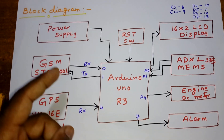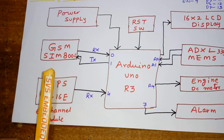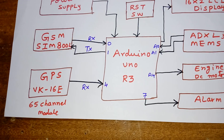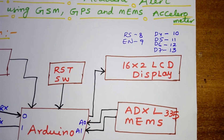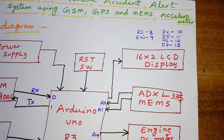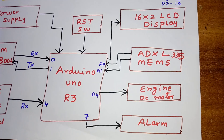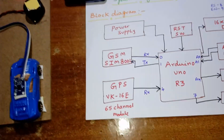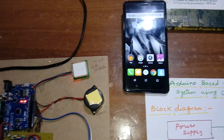In this project I am using an Arduino Uno R3 board, one power supply unit, one GSM SIM800L module, a GPS VK16E 65-channel GPS module, one 16x2 LCD display with RS, EN, D4, D5, D6, D7 connected to the Arduino pins, and one ADXL335 MEMS accelerometer sensor.